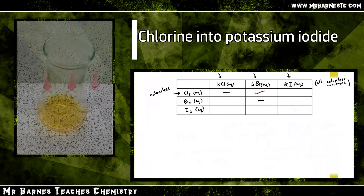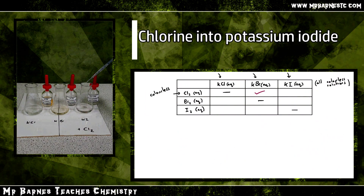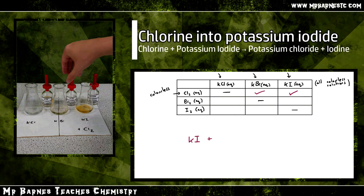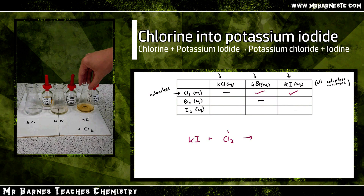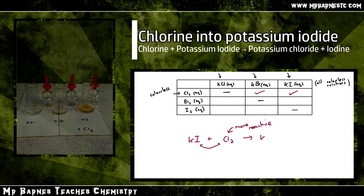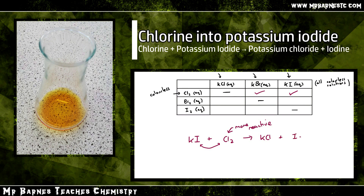Moving on to potassium iodide — adding chlorine to that, you can see there is another colour change, therefore a reaction has occurred. The equation: potassium iodide (KI) reacting with chlorine (Cl₂). Chlorine is more reactive so it displaces iodine, giving KCl and I₂. The colour change goes from colourless to brown.